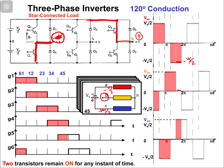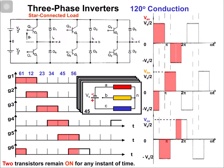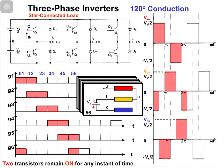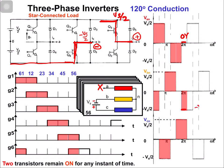The last switching state is 5 and 6. Because of switch 5, phase C is connected with the positive terminal, so vcn = Vs/2. Because of switch 6, phase B is connected with the negative terminal, so vbn = -Vs/2. Phase A is floating, so van = 0. This is shown in the equivalent circuit.